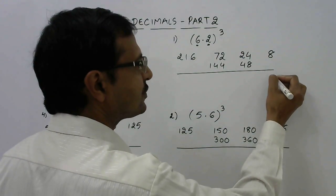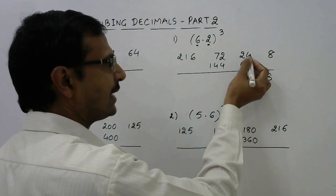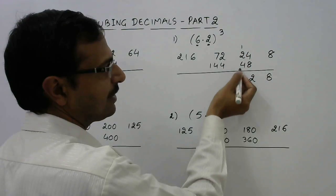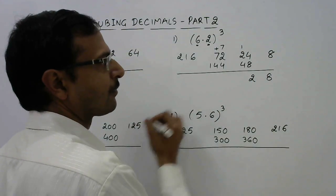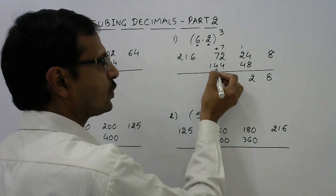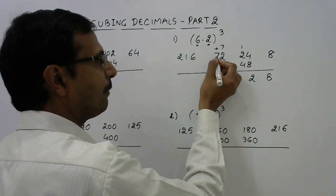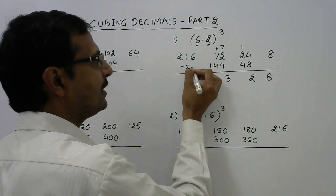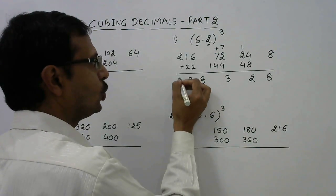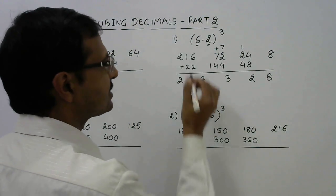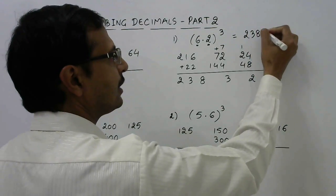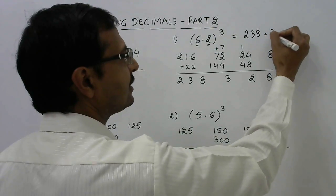So this is a single digit number which will come here. Now add the unit digits 8 plus 4 is 12, so we will have 2 here and this 1 will be added here. So 1 plus 2 is 3, 3 plus 4 is 7, 7 plus 2 is 9, 9 plus 4 is 13, so 3 and 1. So 1 plus 4 plus 7 is 12, 12 plus 1 carry is 13, 13 plus 7 is 20, 20 plus 1 carry is 21, 21 plus 1 carry is 22. This will be added here. Now we have 8, 3, 2.